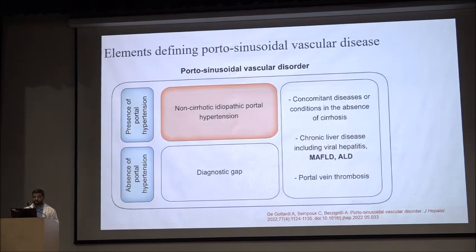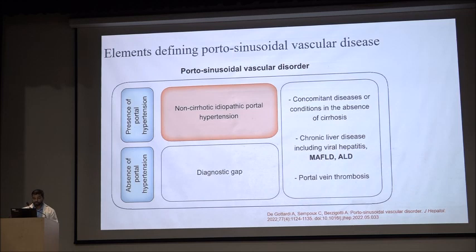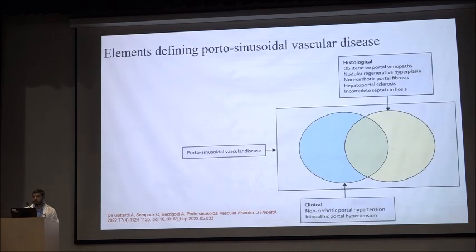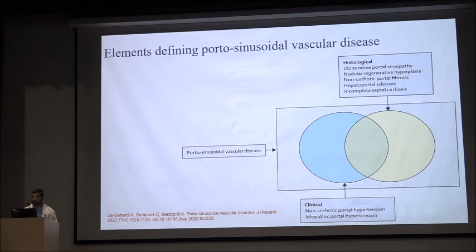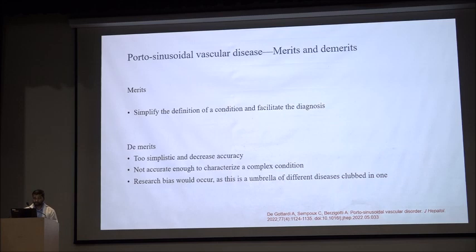PSVD includes patients with portal hypertension and NCPH, as well as patients who don't have portal hypertension but have biopsy-proven features of NCPH — these were the diagnostic gap. It also includes patients with chronic liver disease, viral hepatitis, MAFLD, ALD, and portal vein thrombosis. Histologically, it encompasses obliterative portal venopathy, nodular regenerative hyperplasia, non-cirrhotic portal fibrosis, hepatoportal sclerosis, and incomplete septal cirrhosis. The merit of this term is also its demerit — it is too simplistic and research bias may occur as it is an umbrella of different diseases.